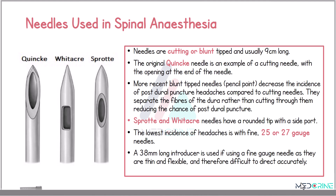What are the needles that we use in spinal anesthesia? Spinal needles can be either cutting or blunt tipped and they are usually 9 cm long. The original Quincke needle is an example of a cutting needle used in spinal anesthesia with the opening at the end of the needle. Blunt tipped needles decrease the incidence of post-dural puncture headaches compared to cutting needles, as they separate the fibers of the dura mater rather than cutting through them, therefore reducing the chances of a post-dural puncture.